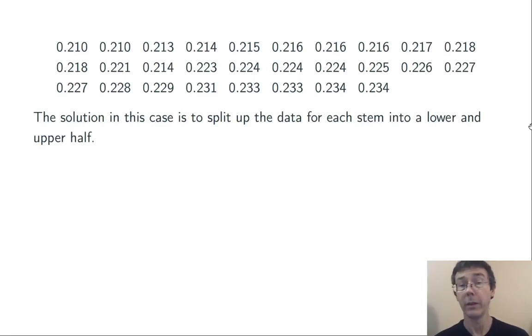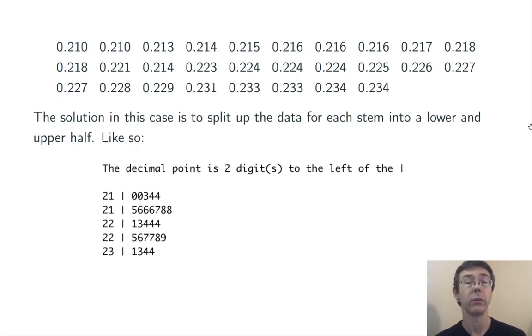So take each one of those stems and write it twice, and let the first one correspond to the final digits leaves of 0, 1, 2, 3, and 4, and the second half of the stem correspond to the digits 5, 6, 7, 8, and 9, like so.